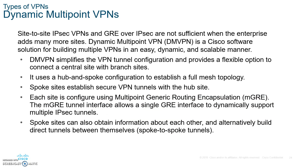Dynamic Multipoint VPN, or DMVPN, is a Cisco software solution for building multiple VPNs in an easy, dynamic, and scalable manner. It uses a hub-and-spoke configuration to establish a full mesh topology.